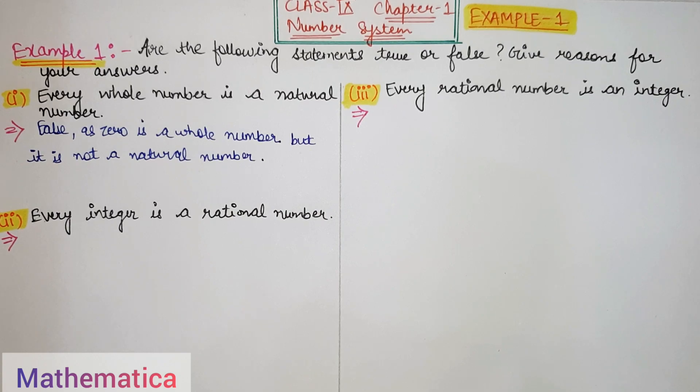The second part is: Every integer is a rational number. Why? Yes, why?